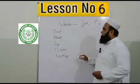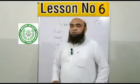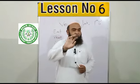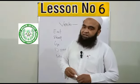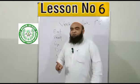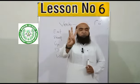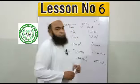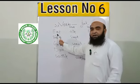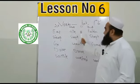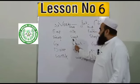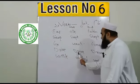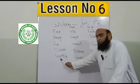Verb کی تین اقسام ہیں، جن کو forms کہتے ہیں: first form, second form, third form۔ مثلاً: eat کی second form ate، third form eaten۔ Slip کی slapped، go کی went، drive کی drove — ہر verb کی تین forms ہوتی ہیں۔